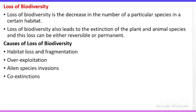The fourth cause is co-extinction. When a particular species becomes extinct, the plants and animals associated with it in an obligatory way also meet the same fate. This means two animals, or an animal and a plant, can co-extinct together. This is also a cause of biodiversity loss.